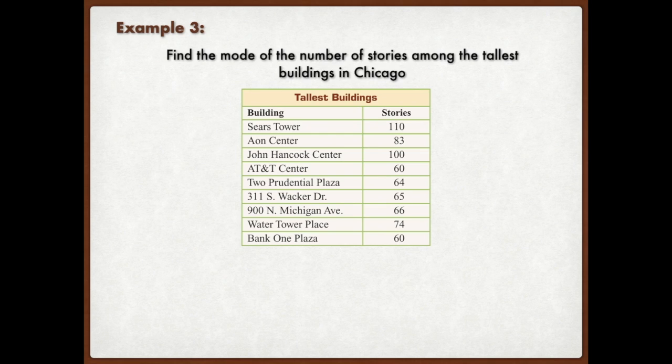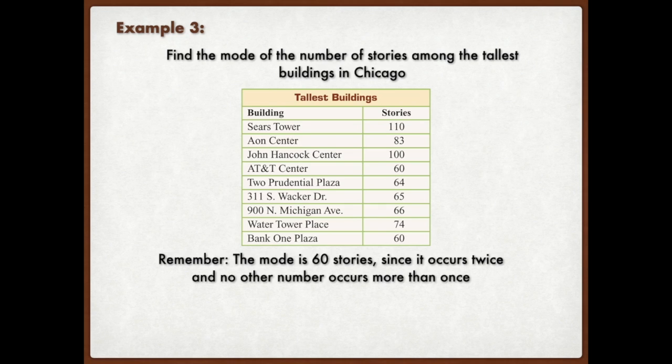Okay, let's go ahead and do the mode. The mode, remember, deals with which one occurs most frequently. I'm going to let you pause it and I want you to see which number, which number of stories occurs the most. Okay, so we went ahead and saw that there's one number that repeats twice. Because it repeats twice and all the other numbers don't repeat, 60 would be the mode.